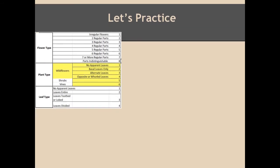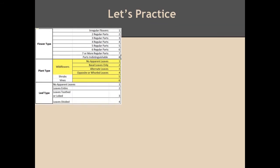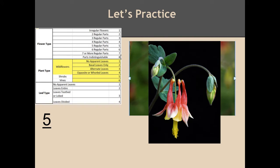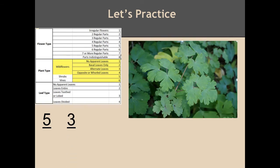Here is flower number three — count carefully. Did you count five regular parts? The leaves are arranged alternately up the stem. And the leaf type? Hopefully you found these leaves divided as well.